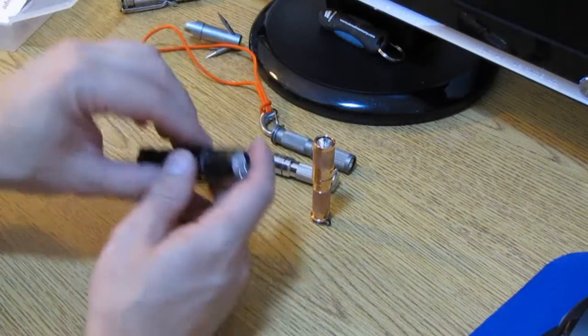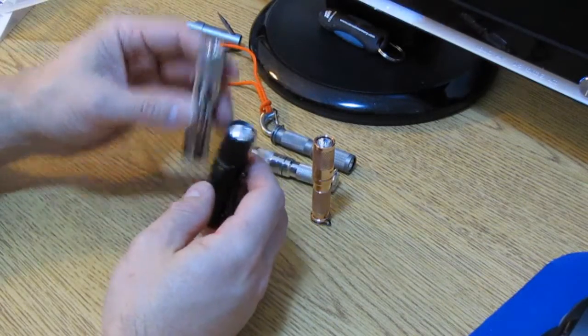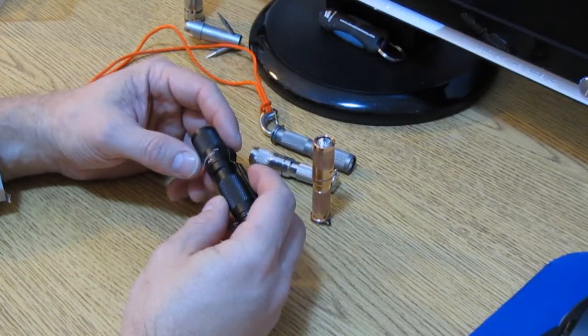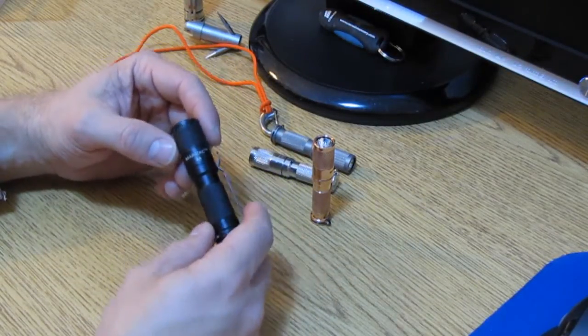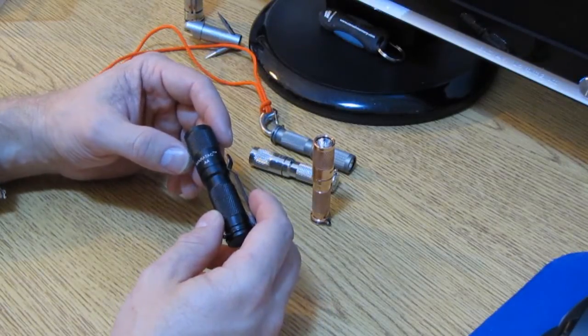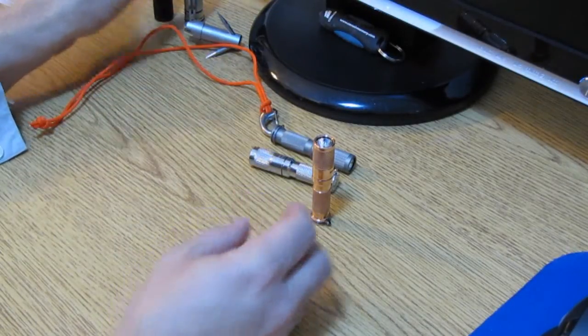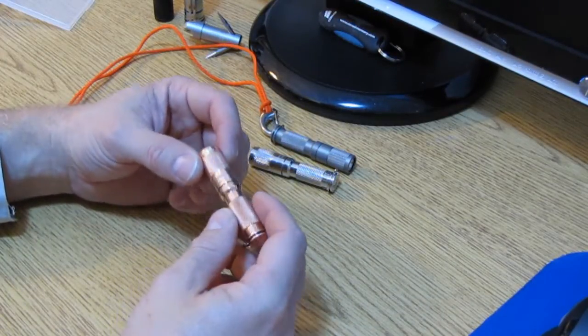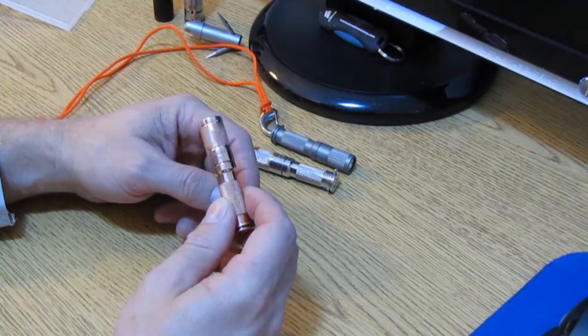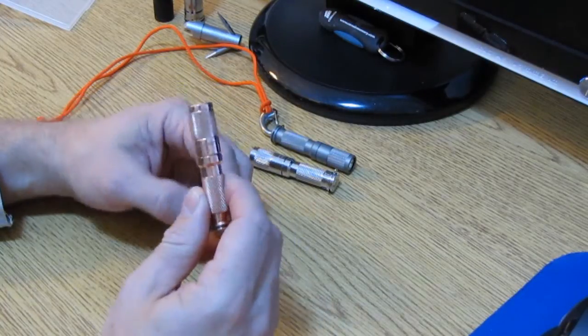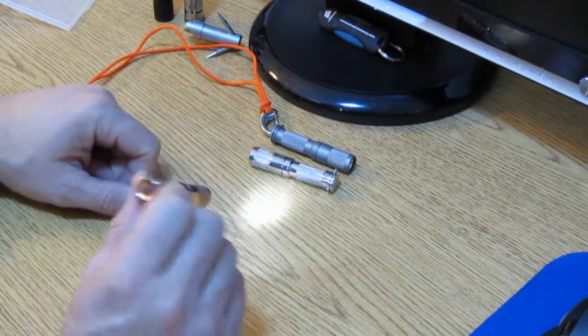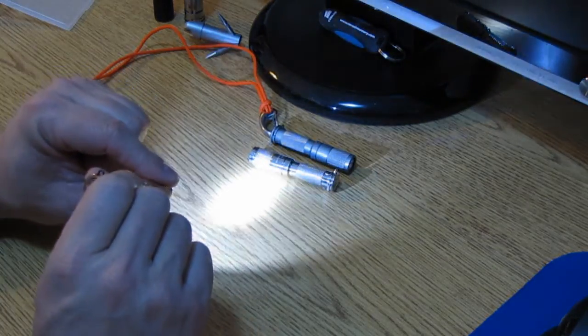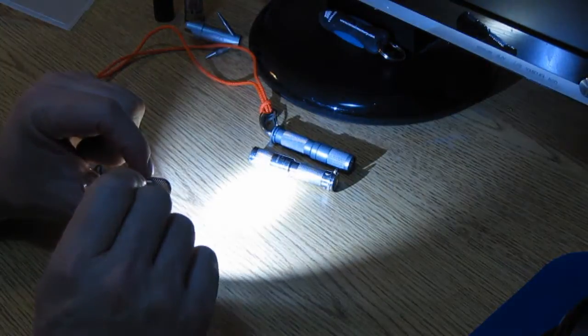When they released the AA version, they actually changed the sequence upon user request. I think that was mostly candle power forums. They changed the mode to low, medium, high. And one of the things about this new light, or the big feature on this, is that's the mode that they've chosen to bring over to this one as well. So when I first turn this on, it goes to low mode. If I turn it off and back on, it goes to medium. And if I go off and back on again, it goes to high.